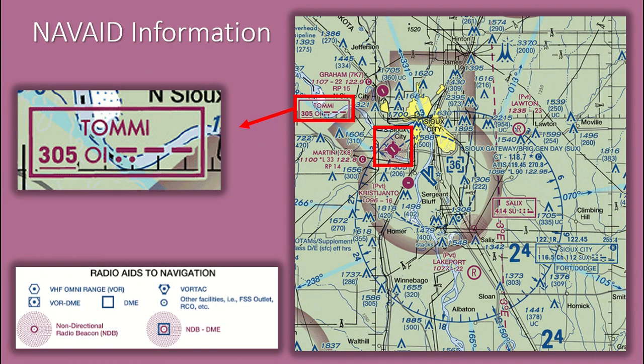Now let's look at Radio Navigation Stations, or NAVAIDs for short. As seen here, Martin has an NDB located on the airfield. The T-6 does not have an ADF, Automatic Direction Finder, but some aircraft in the Air Force do. NDBs are a type of ground NAVAID that are slowly being phased out of existence. Since the T-6 does not have an ADF, we will not spend any time discussing it.